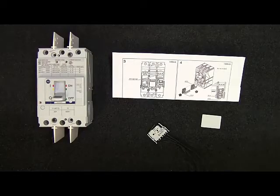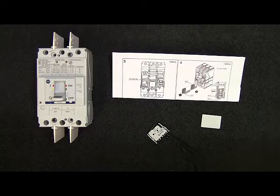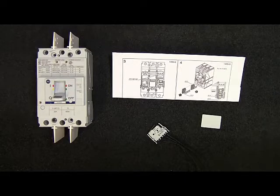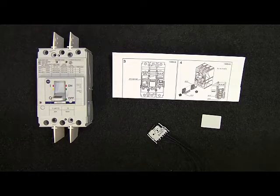Thanks for joining us here at Rockwall Automation. Today we'll see how simple it is to install auxiliary contacts used with your Bolton 140G molded case circuit breaker. For this demonstration we'll be using a 140G G-frame, but the process is the same for the i-frame breaker.